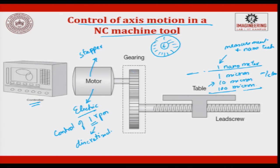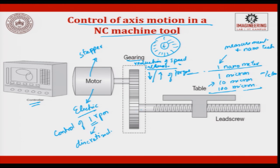After discretization, the signal is given to a gear. In the gearbox you can do reduction of speed, increase of speed, reduction or increase of torque — depending upon the shape and number of teeth you can decide the reduction or increase. This in turn is attached to a lead screw. In the lead screw there is a terminology called pitch, and depending upon the pitch the rotation controls the resolution.